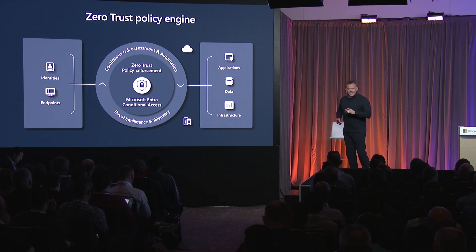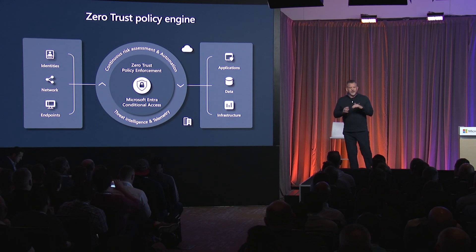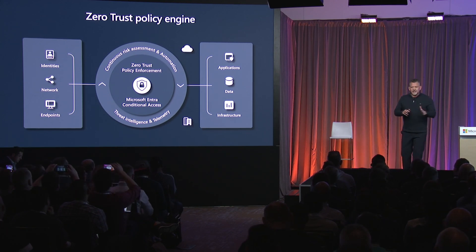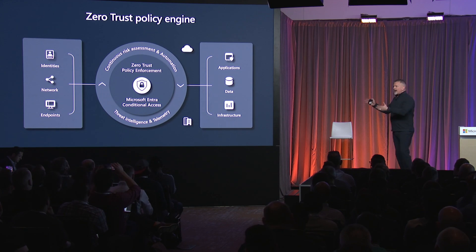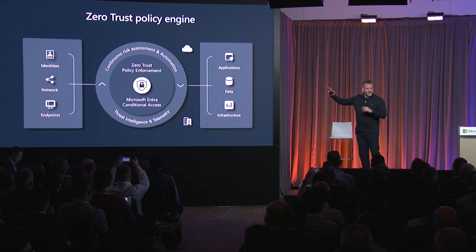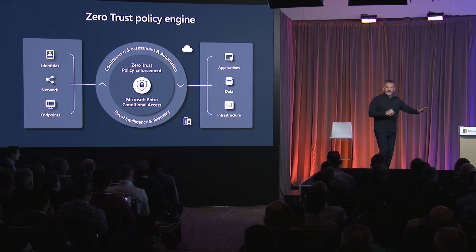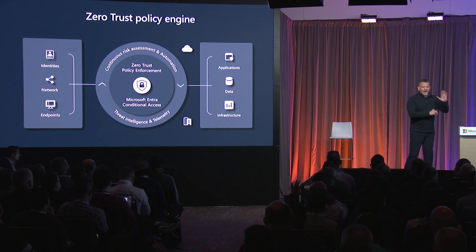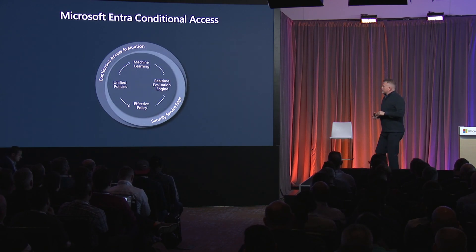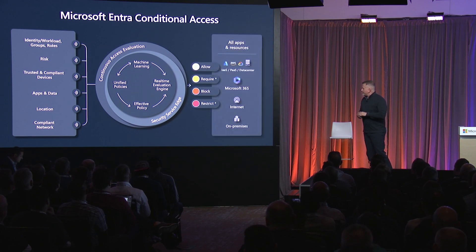Up until now, we've had identities and endpoints. I'm really excited that with the addition of intra-private access and internet access, we can now bring the network into that as well. So not only are we able to give you signals about whether this is the right person on the right device, but now we can tell you whether they're coming over a secure network and where they're coming from. This gives us a bunch of really cool new capabilities.